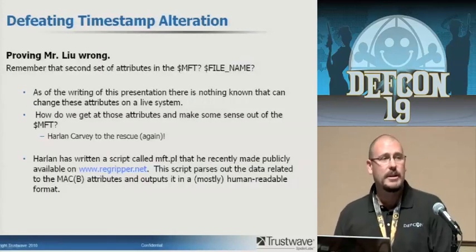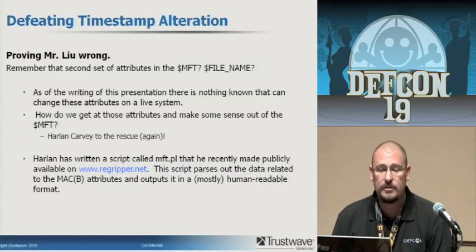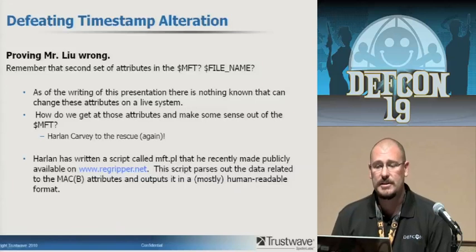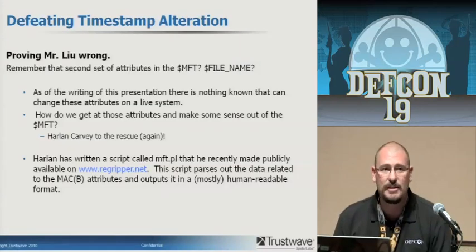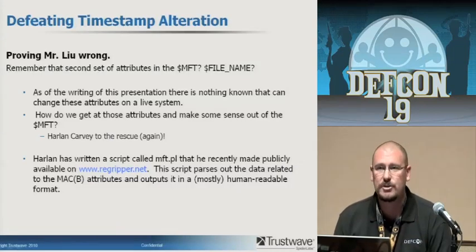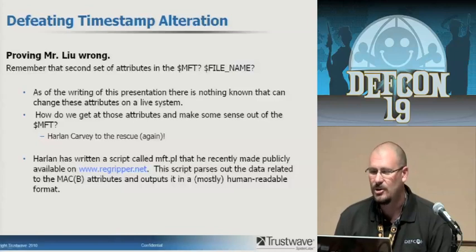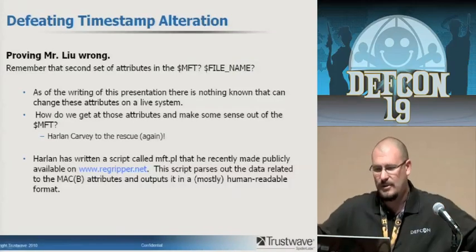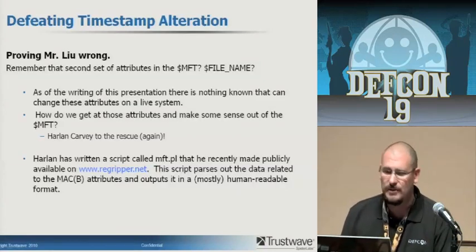Here's where that second set of timestamps in the master file table comes in — the dollar file name attribute. It's not accessible to anything but the system kernel. As of the writing of this presentation, there is nothing known that can change these attributes on the system short of extracting it, modifying it, and putting it back on a live system — which is not feasible. It could theoretically be done, but it would be a mess, and the machine probably wouldn't even work again if you tried.